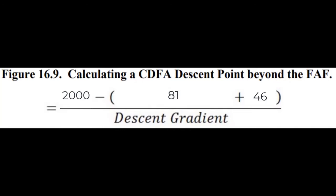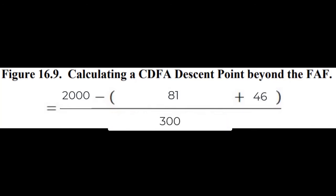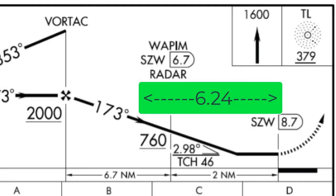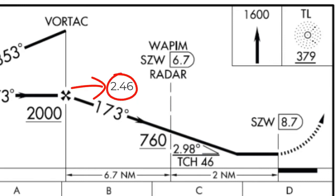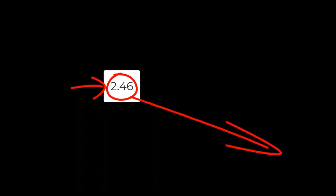In this case, the final approach fix altitude is 2,000 feet, the airport elevation is 81 feet MSL, and the threshold crossing height is 46 feet. A descent gradient of 2.98 degrees can be approximated as about 300 feet per nautical mile. Running the numbers gives a calculation of 6.24 nautical miles — six and a quarter miles from the end of the runway — to start your descent on a 3-degree glide slope, which will put you 46 feet above the ground. Since the DME is counting up, subtract 6.24 from 8.7 to get the DME at which to begin the descent. Starting the descent at 2.46 DME gives one single constant descent final approach from 2,000 feet MSL down to the runway, with no pitch/power changes needed to accommodate for obstacles.